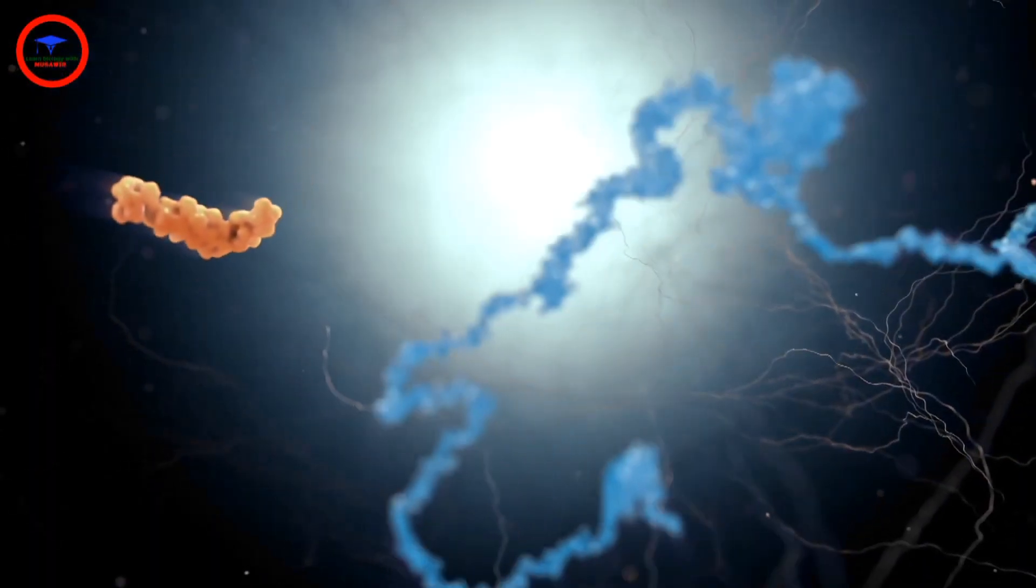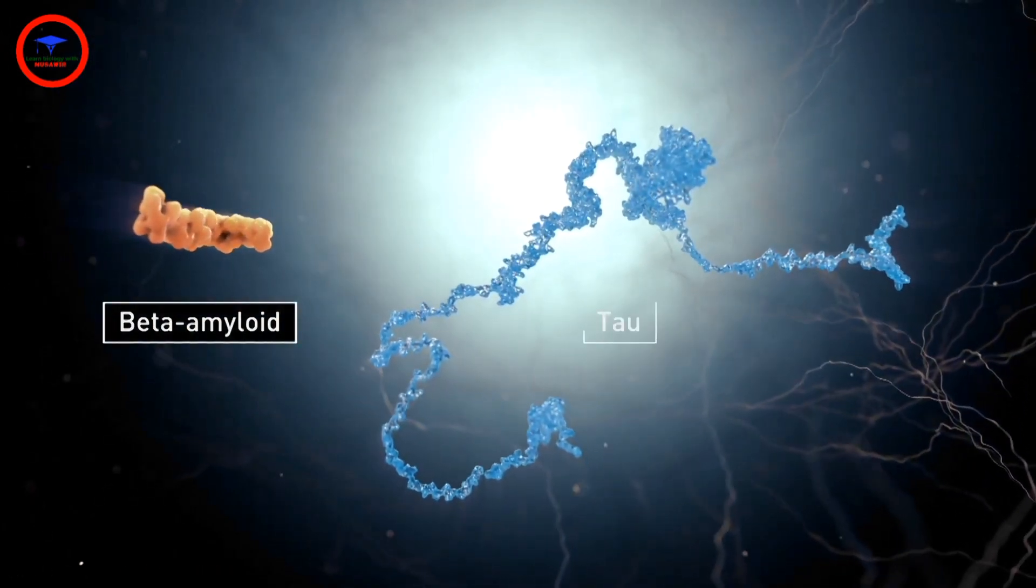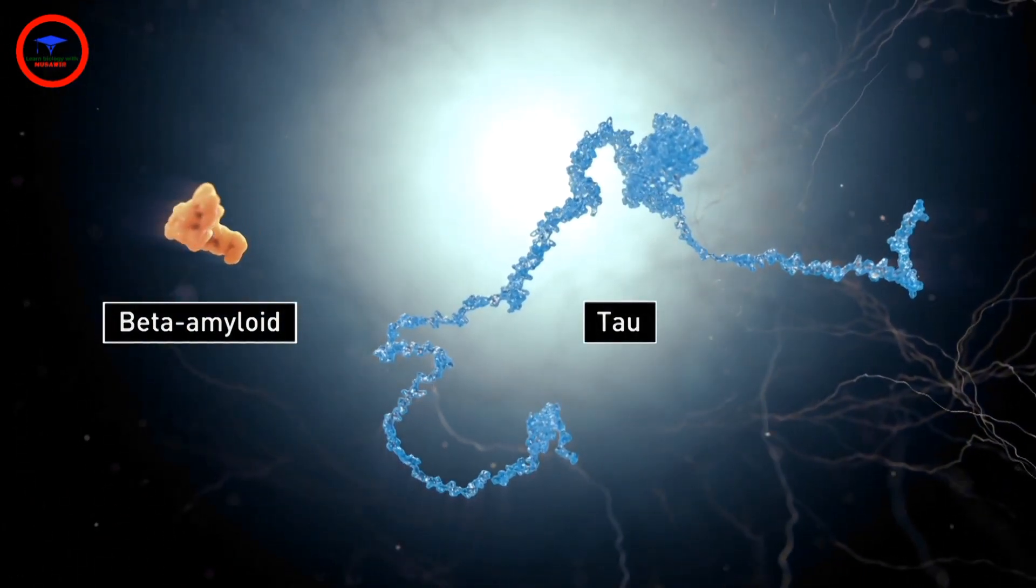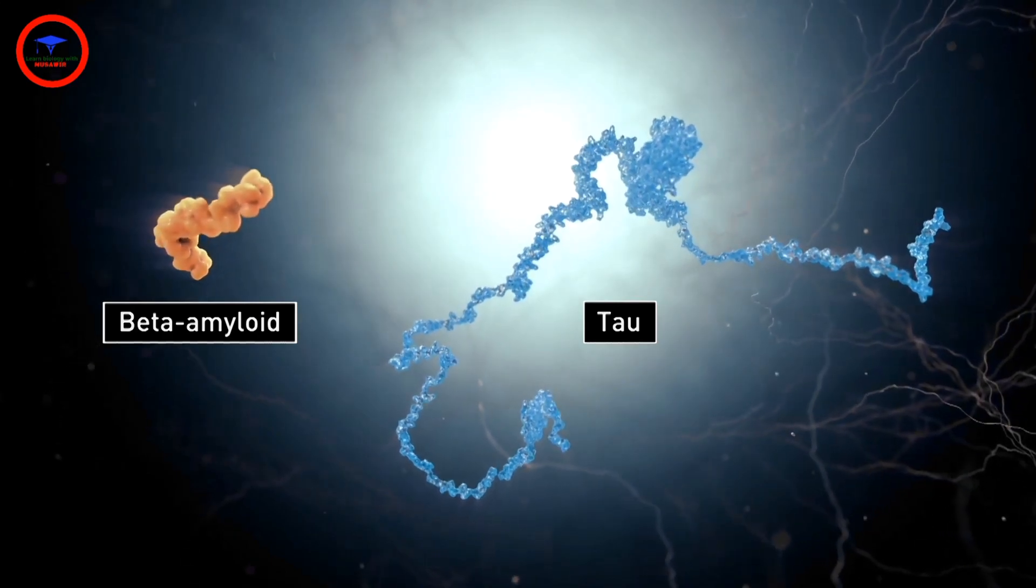Researchers believe that this process involves two proteins, called beta-amyloid and tau, which somehow become toxic to the brain.